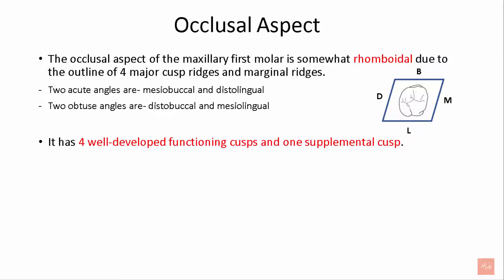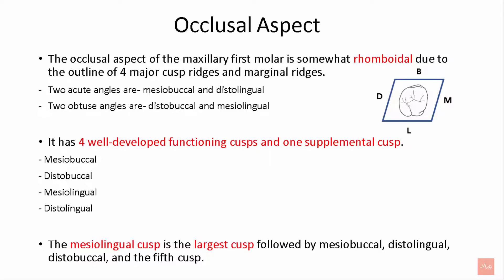The tooth has four well-developed cusps — mesiobuccal, distobuccal, mesolingual, and distolingual — and one supplemental cusp. The mesolingual cusp is the largest, followed by mesiobuccal, distolingual, distobuccal, and then the fifth cusp.